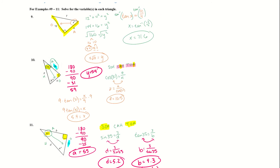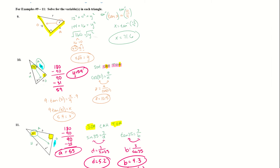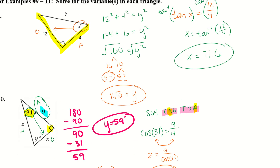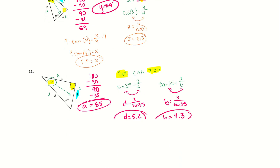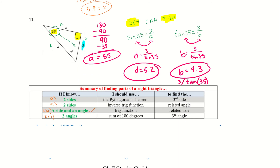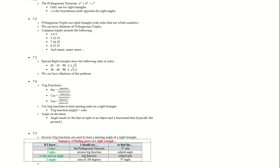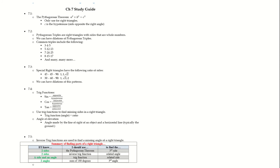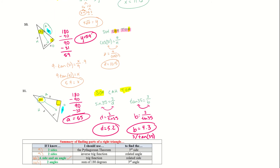Examples 9, 10, and 11 are really good problems for deciding whether to use a trig function or an inverse trig function, and using the fact that angles add up to 180 degrees — plus the Pythagorean theorem when applicable. Use the summary of finding parts of a right triangle as reference. Section 7.5 was the last topic for chapter 7, so please rewatch anything you need, and if you have further questions reach out to your teacher. Have a wonderful day!